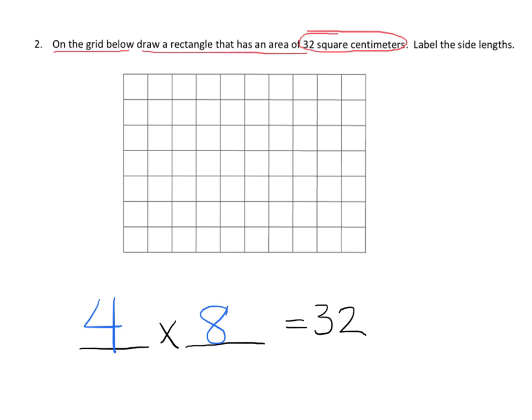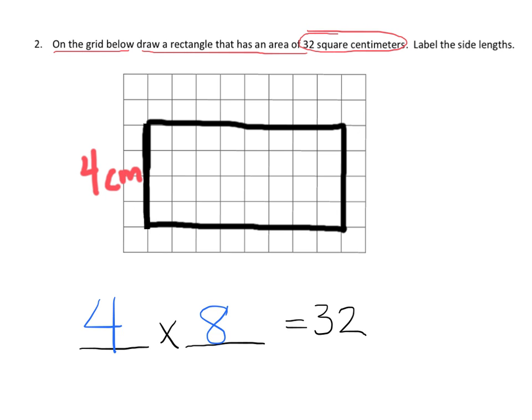So that tells me that our rectangle is going to be 1, 2, 3, 4 centimeters tall, and 1, 2, 3, 4, 5, 6, 7, 8 centimeters wide. And I'm going to label that 4 centimeters and 8 centimeters.